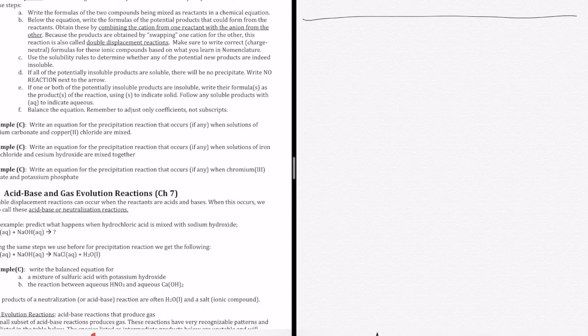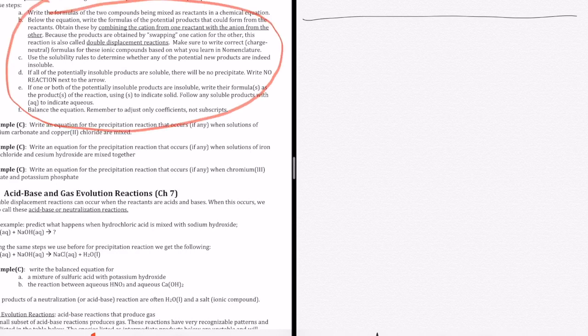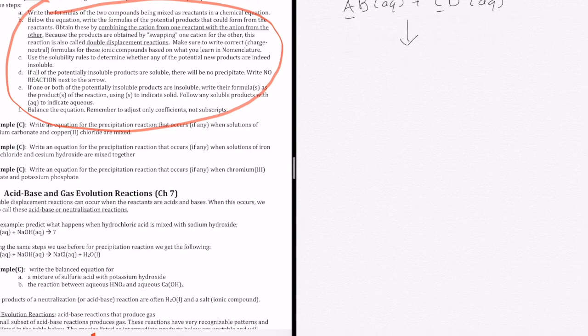So how do we know whether two aqueous reactants will give us a precipitate or not? Well, we follow the steps that's outlined here in the notes. First, we start with the reactants, which are both soluble ionic compounds. We can label these AB aqueous and CD aqueous. To create the products, what we do is we swap the cations, A+ and C+, and partner them up with the opposing anions. What we have now is AD and CB.